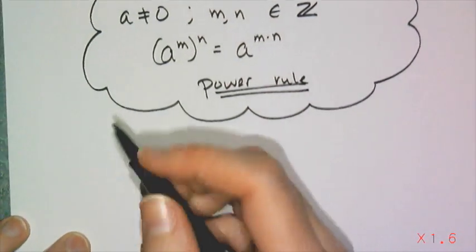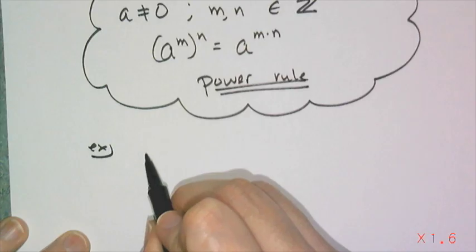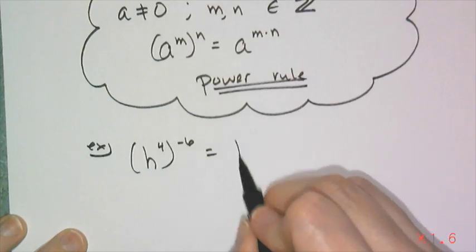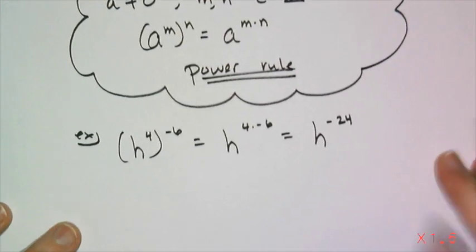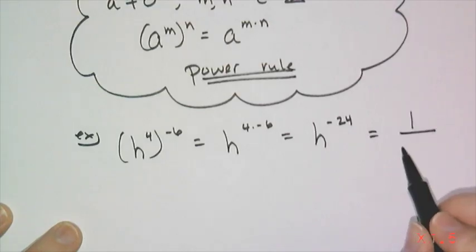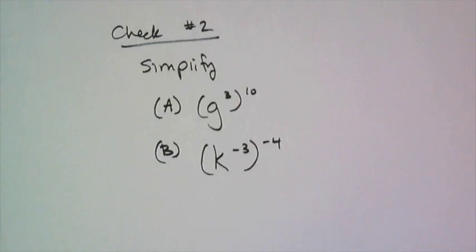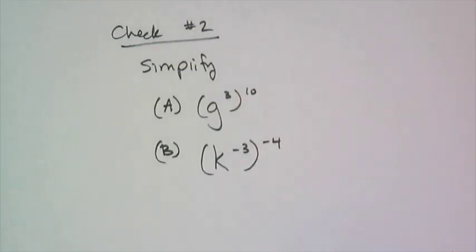A quick basic-level example: this works with positive or negative exponents. If I have h to the 4th raised to the negative 6th power, the power rule says I take the exponents and multiply them together, so I get h to the negative 24th power. That's not simplified because I cannot have a negative exponent — negative exponents mean reciprocals — so it means I have 1 over h to the 24th power. Now simplify g cubed raised to the 10th power, and k to the negative 3rd raised to the negative 4th power.